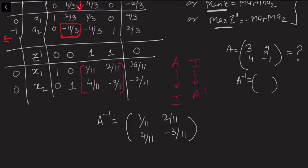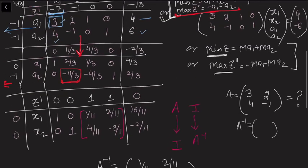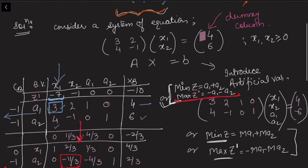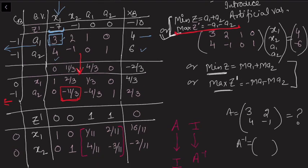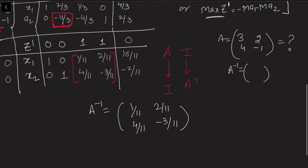We did not worry about the negative value −2/11 because we are not solving a linear programming problem — we are not looking for a feasible or infeasible solution. All values here arose from the dummy introduction. Had we used a valid system with a real solution we would have gotten a positive solution, but that was not necessary. We were interested only in finding the inverse. This is how you can use the simplex method to find the inverse of a given matrix.